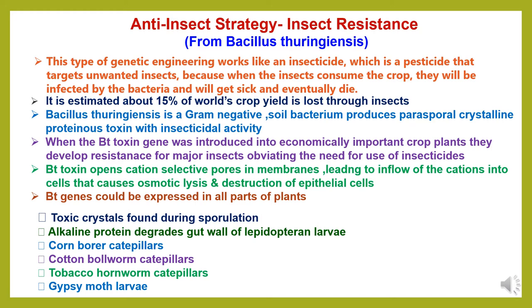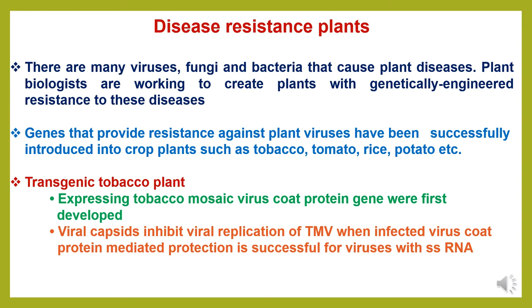When the Bt-toxin gene was introduced into economically important crop plants, they developed resistance against major insects, avoiding the need for use of insecticides. Bt-toxin opens cation-selective pores in membranes leading to inflow of cations into cells, causing osmotic lysis and destruction of epithelial cells. Bt genes can be expressed in all parts of plants. Alkaline protein degrades gut walls of lepidopteran larva insects. Examples include corn borer caterpillars, cotton bollworm caterpillars, tobacco hornworm caterpillars and gypsy moth larvae.